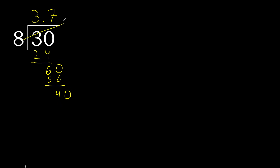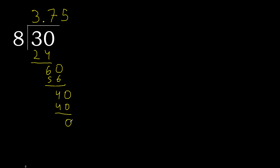8 multiplied by 5 is 40, which is not greater. Subtract 0. 0, therefore finished.